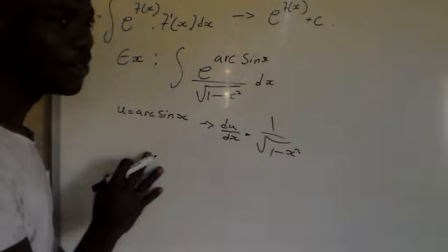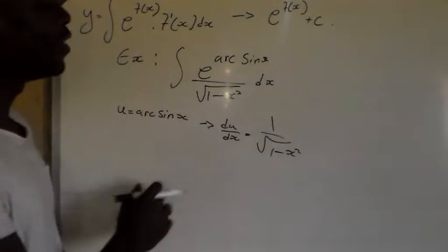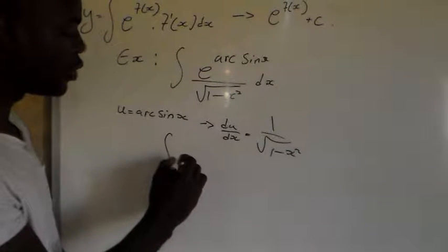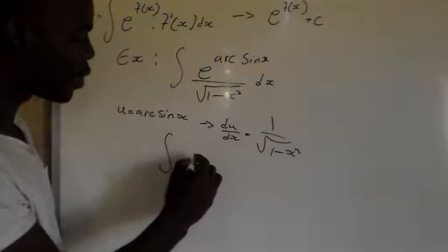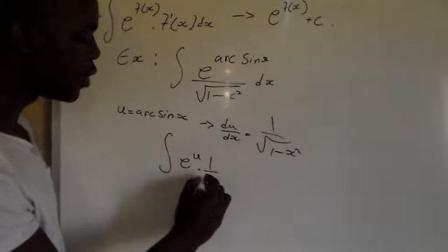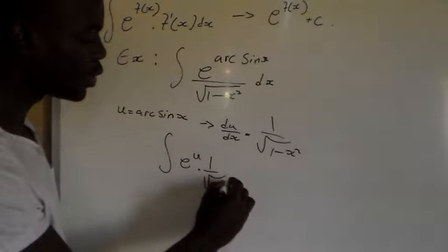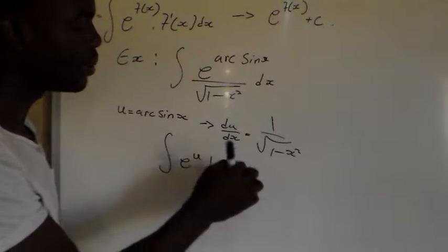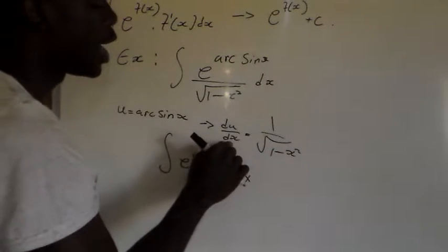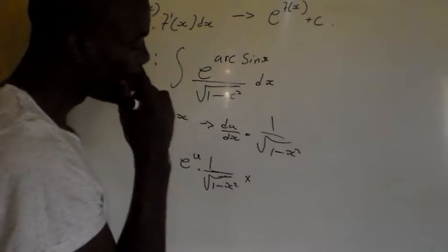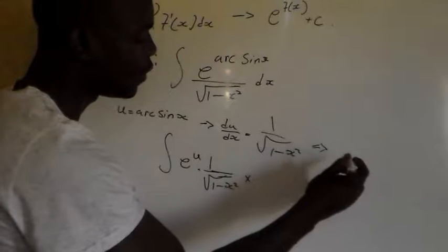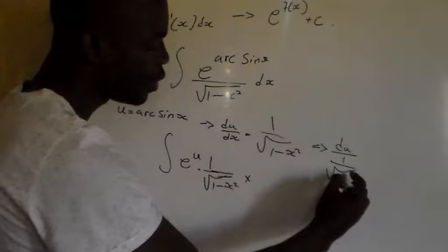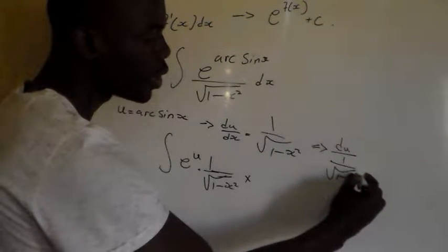Remember this is Mathematics N5. So u is equal to arcsin x, and therefore we're going to have e to the power u multiplied by 1 over the square root of 1 minus x squared. Now we're going to make dx the subject of the formula. So dx equals du divided by 1 over the square root of 1 minus x squared.